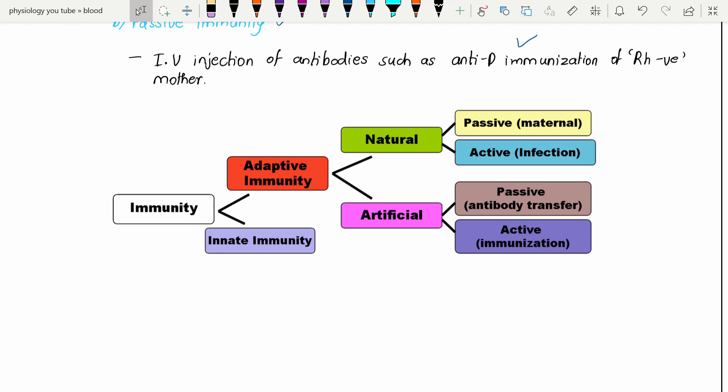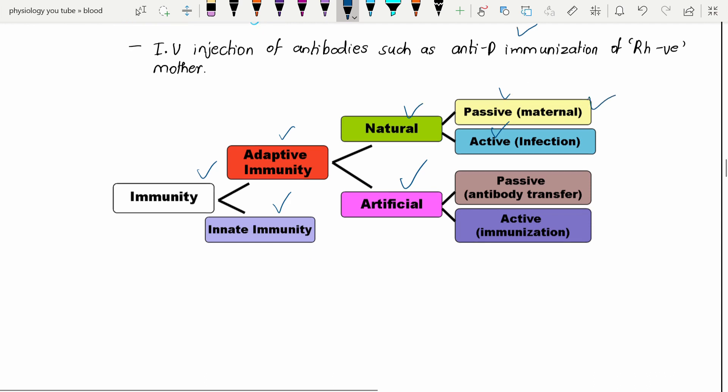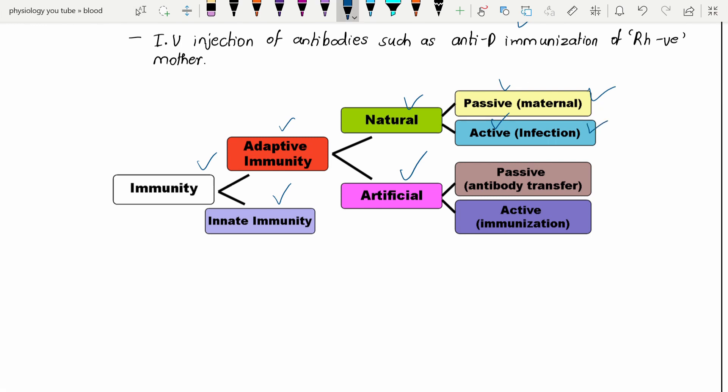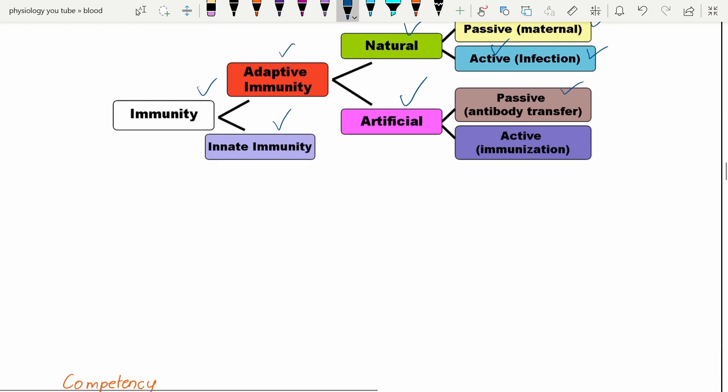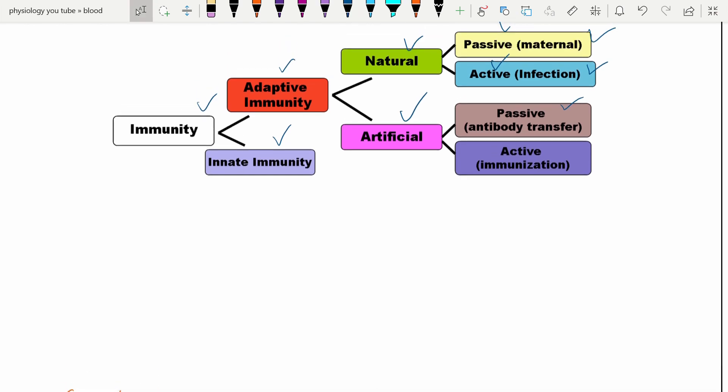This is a small chart which helps us remember and understand a lot. Immunity we divide into adaptive and innate immunity. In adaptive immunity: natural and artificial. In each of them, passive and active. So in naturally acquired immunity, passive immunity is mainly from the mother, and active immunity we get from infection. In artificially acquired immunity, we get passive immunity from antibody transferred through IV or any other route, and active immunity through immunization.